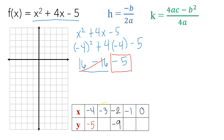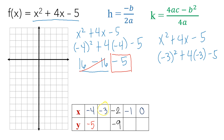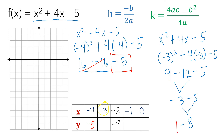Next, substitute x equals negative 3 into x squared plus 4x minus 5. We get negative 3 squared plus 4 times negative 3 minus 5, which is 9 plus negative 12 minus 5. That gives 9 minus 12 equals negative 3, then negative 3 minus 5 — both negative, so 3 plus 5 equals 8, and we copy the negative sign. So y equals negative 8.